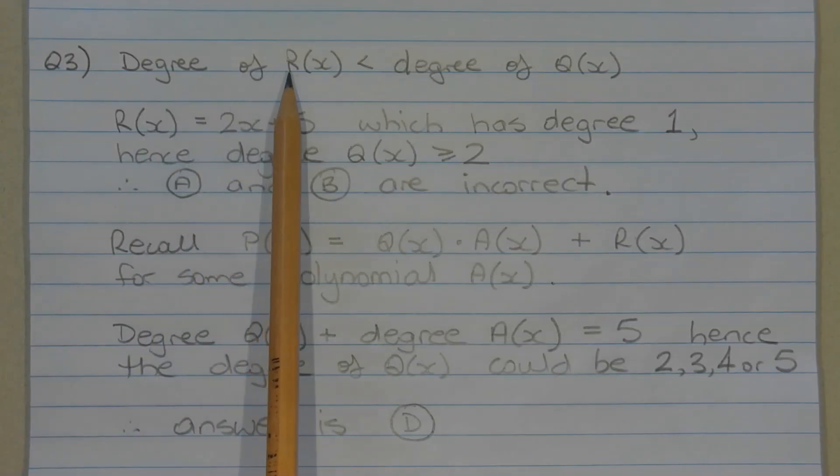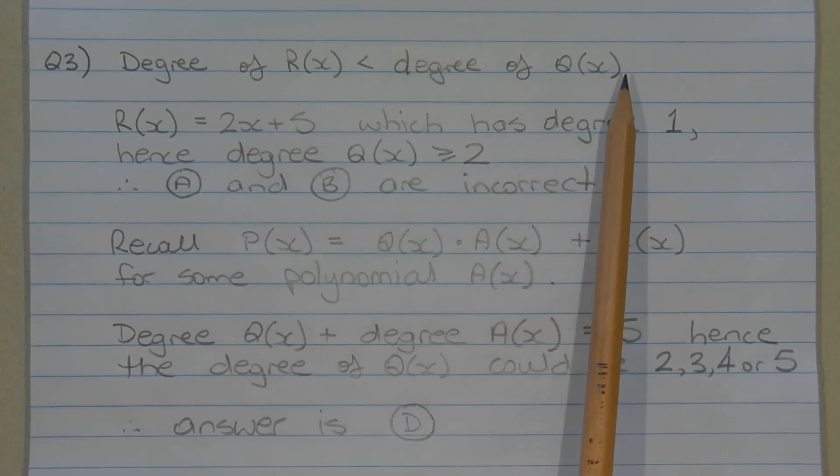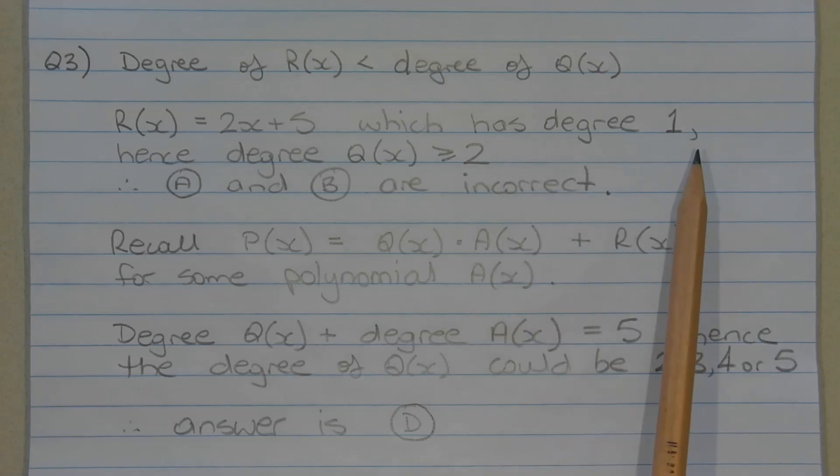The degree of the remainder polynomial r of x must be less than the degree of the divisor polynomial q of x. Now r of x is equal to 2x plus 5, which has a degree of 1. Hence, the degree of q of x must be greater than or equal to 2. Therefore, options a and b are incorrect.